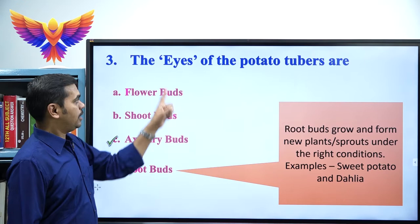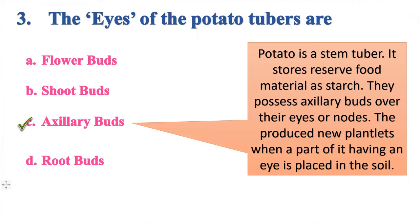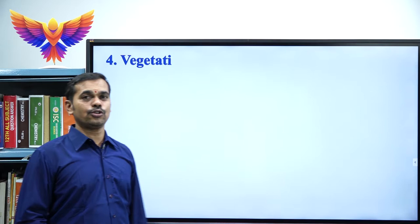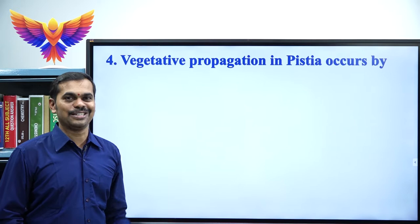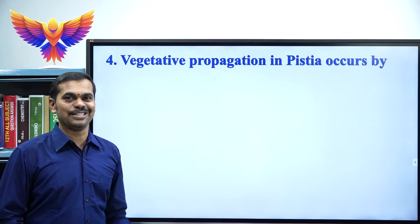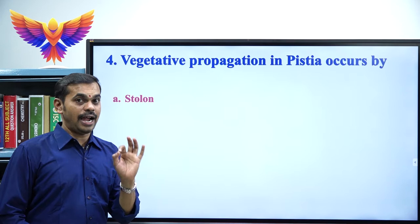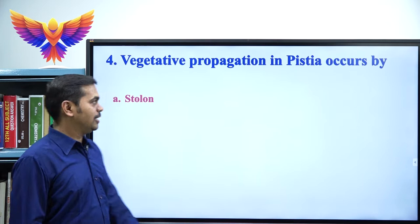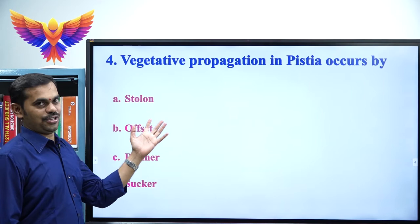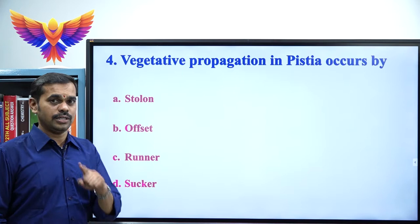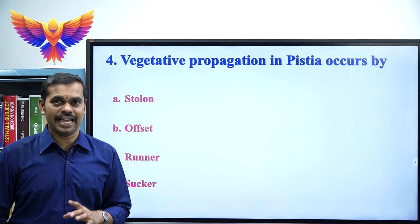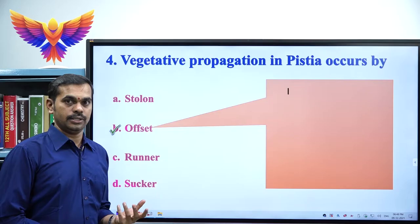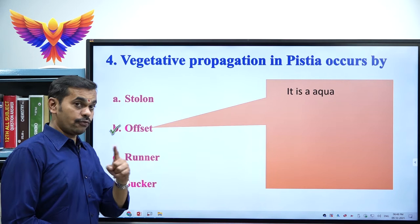For question 3, the eyes of potato tubers are axillary buds. Question 4: Vegetative propagation in Pistia occurs by — options: A) Stolon, B) Offset, C) Runner, D) Sucker. The correct option is B, offset. Pistia is an aquatic weed that reproduces vegetatively by offset — one internode-long runners that grow horizontally along the soil surface, giving rise to new plants from axillary or terminal buds.